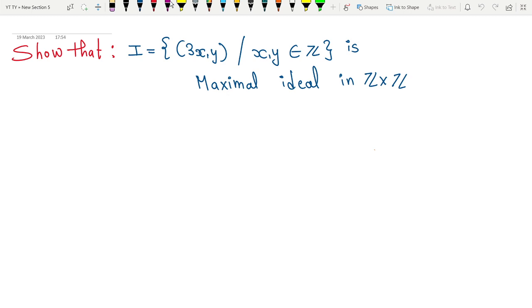I can see the I is defined in such a way that it is nothing but 3x,y where x and y are integers. What I observe is my first coordinate is always an integer multiple of 3 and the second coordinate comes from integers. So I can write my this I is actually nothing but 3Z×Z. I need to show that is a maximal ideal in Z×Z.